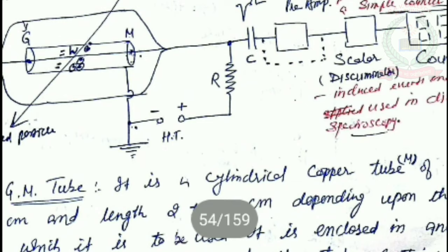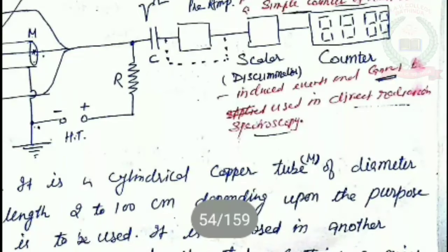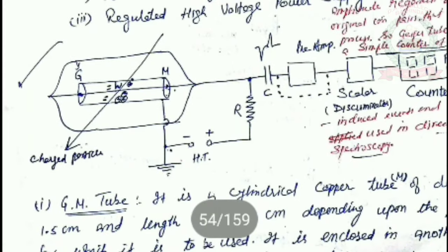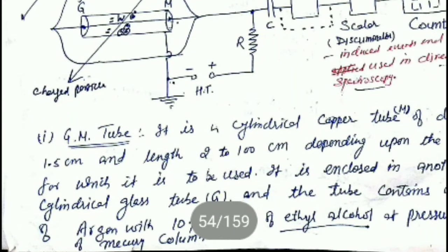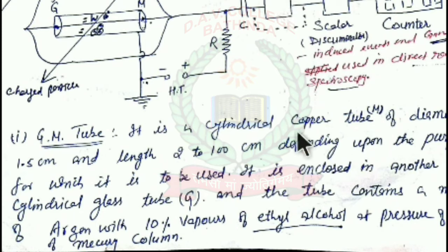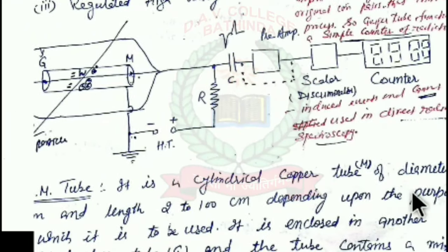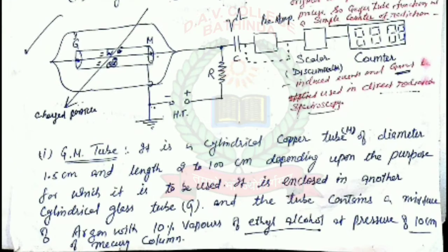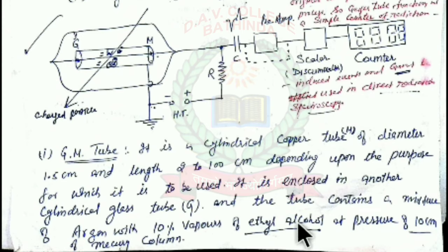The detected signal is amplified and displayed on a digital display to give the count of the number of charged particles passing through it. The GM tube itself is a cylindrical copper tube of diameter 1.5 cm and length up to 200 cm, depending on the purpose for which it is to be used. It is enclosed in another cylindrical glass tube.